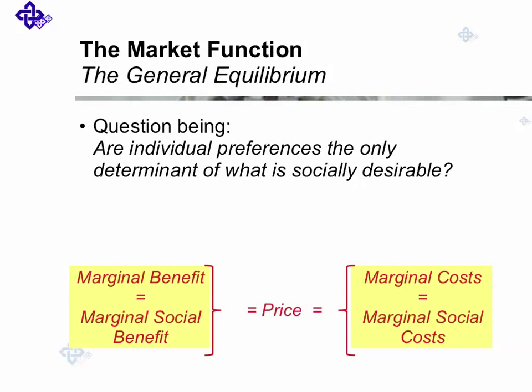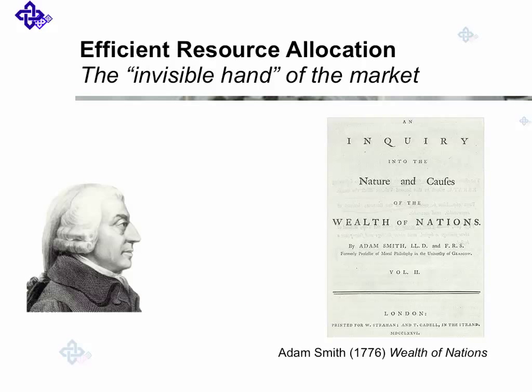In this market, all consumers and all producers interact — they make up the society. So classical economics would suggest that the free market automatically reflects the preferences of the whole society. Marginal private benefits equal marginal social benefits, and marginal private costs equal marginal social costs — both matched up with the price. The question is: are individual preferences the only determinant of what is socially desirable? Adam Smith said yes — the market equilibrium does reflect the preferences of the whole society, and the market does not fail.